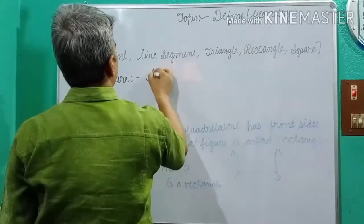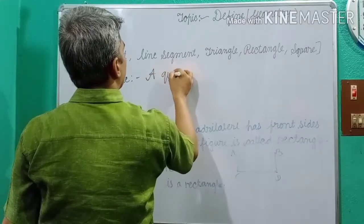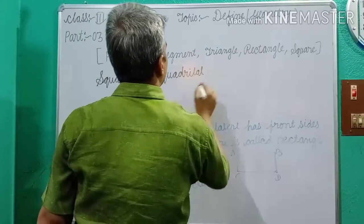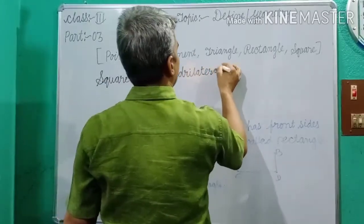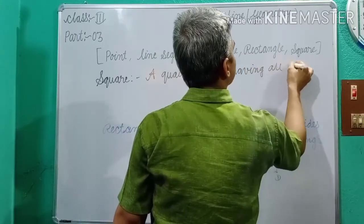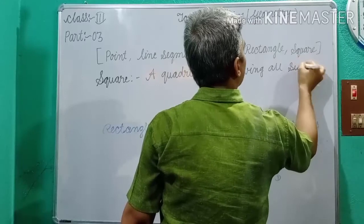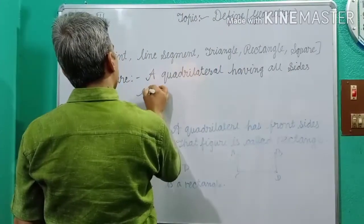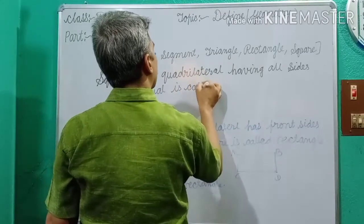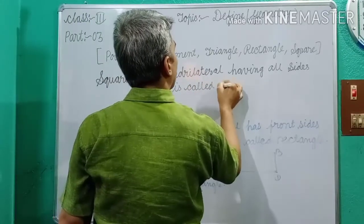A quadrilateral having all sides equal is called a square.